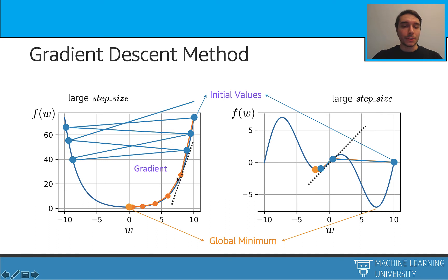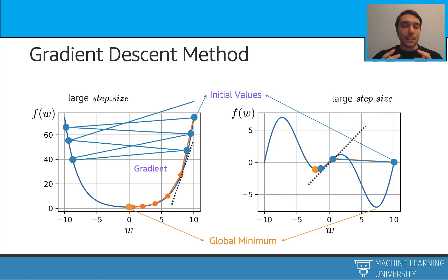Let's take a look at these graphs. On the left graph, assume this is my initial value. I start here and take small steps towards the minimum — those are the orange values. With a large step size, there is a chance of overshooting: I could jump from one side to the other repeatedly, which is a very undesirable situation.